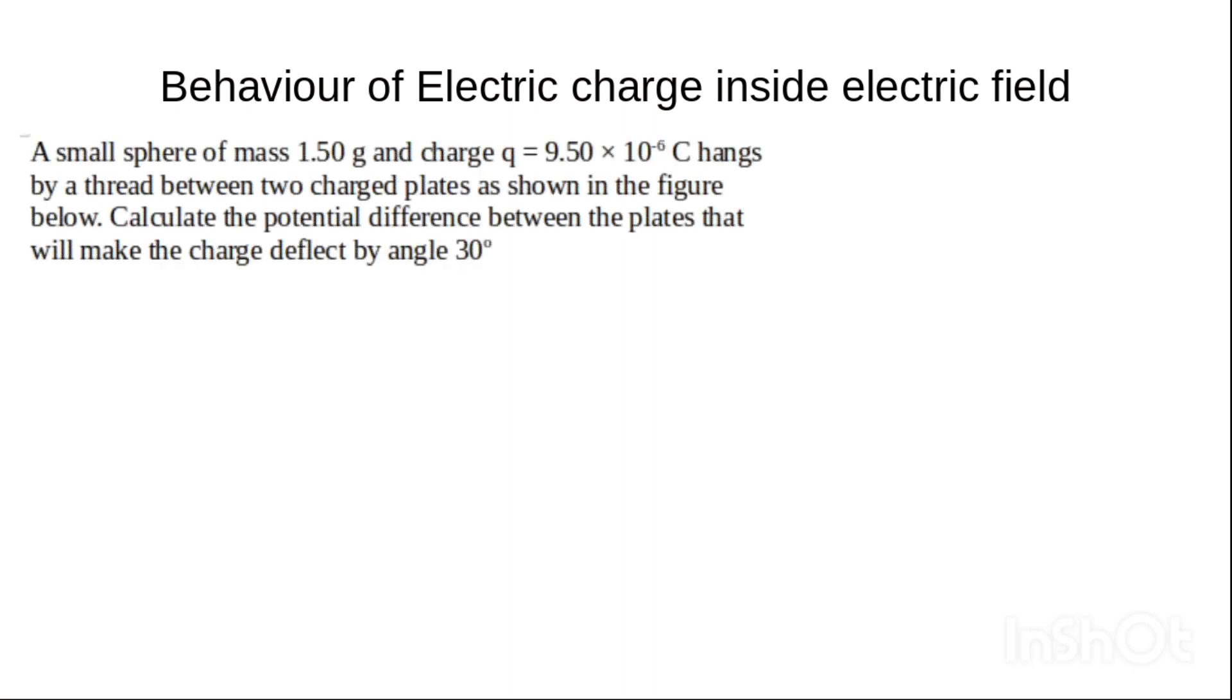We have a small sphere of mass 1.5 grams and charge q, a positive charge q equal to 9.5 × 10^-6 Coulombs, that hangs by a thread between two charged plates as shown in the figure below. Calculate the potential difference between the plates that will make the charge deflect by an angle of 30 degrees.